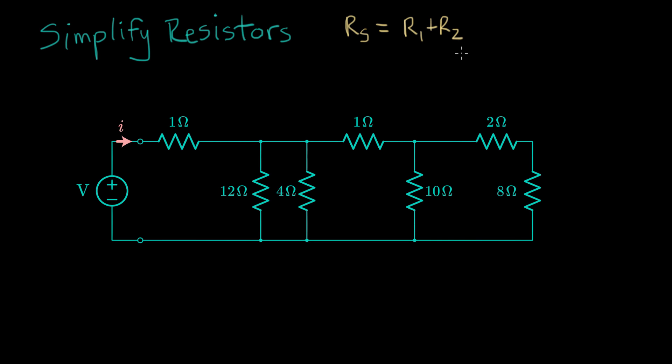And we learned that if we have resistors in parallel, meaning they share the same nodes, we can get a parallel equivalent resistor, R parallel. If there are two resistors in parallel, the formula is R1 times R2 over R1 plus R2.